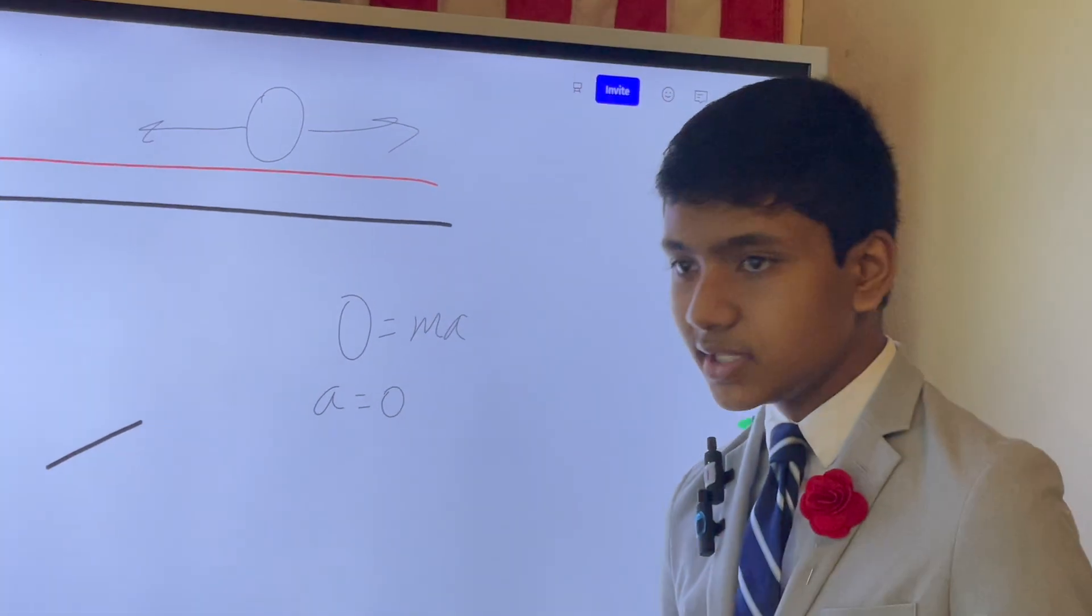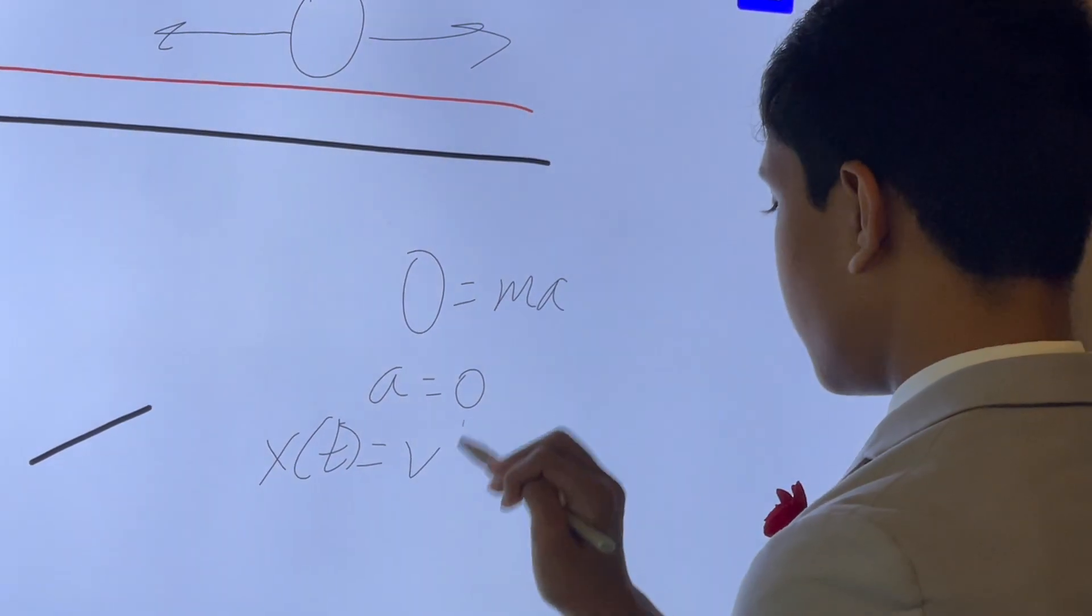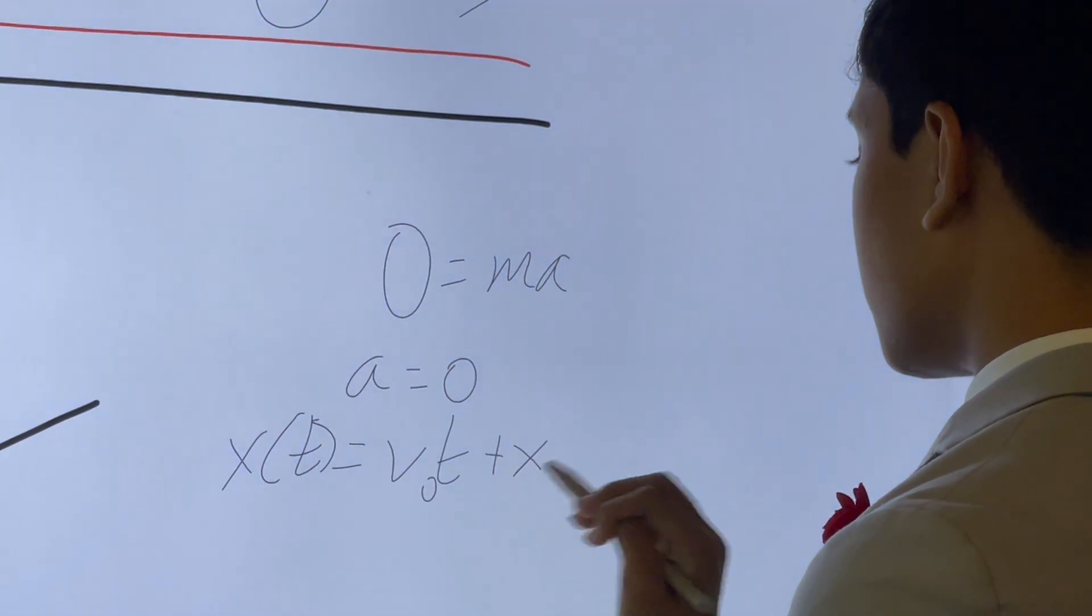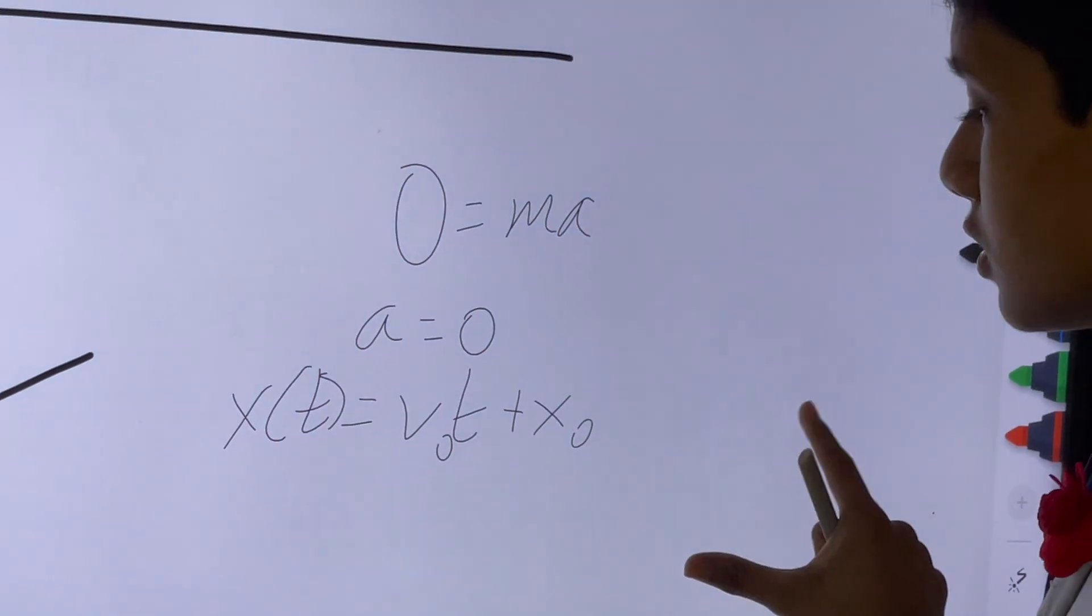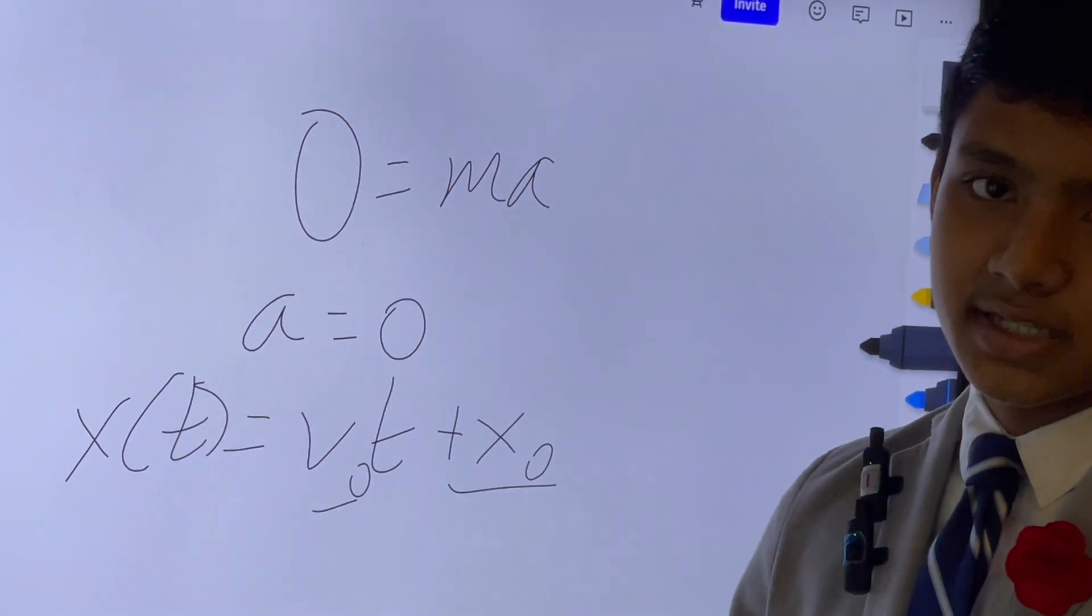And what does that mean? Well, the position solution has to be of the form v0t plus x0, where these two are constants. Since any higher order terms are automatically equal to zero.